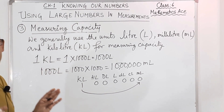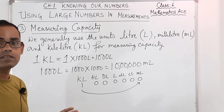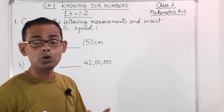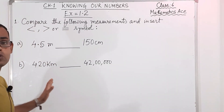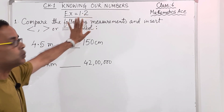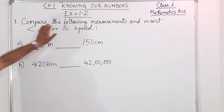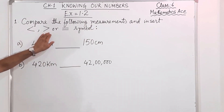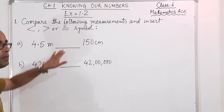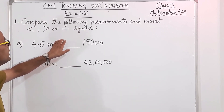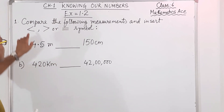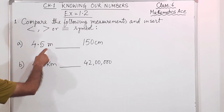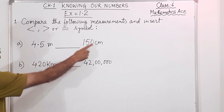So I think the concept of measuring length, mass, and capacity is clear. Now we are going to solve sums. Students of class 6, we are going to solve exercise 1.2. The first question is: compare the following measurements and insert less than, greater than, or equal to symbol in the blanks. So 4.5 meter and 150 centimeter.